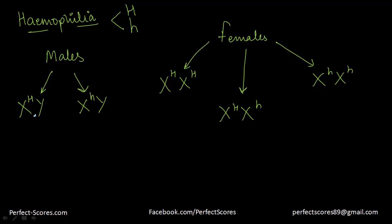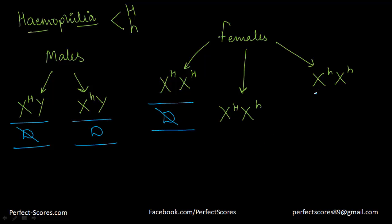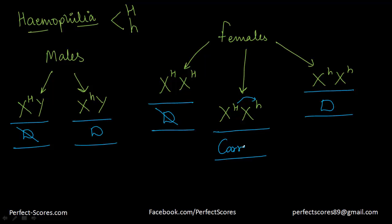If the male has the dominant allele, he is not suffering from the disease. If he has the recessive allele, he is suffering from the disease. If females have both dominant alleles, they are not suffering from the disease. If they have both recessive alleles, they are suffering from the disease. If they have a heterozygous condition — one dominant, one recessive — since the dominant overpowers the recessive, they do not suffer from the disease, but they have the ability to pass it on to future generations, so they are known as a carrier.